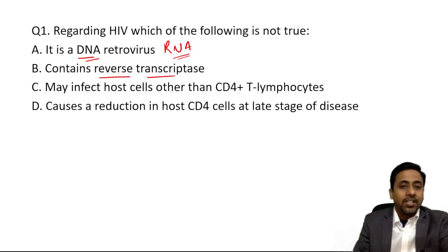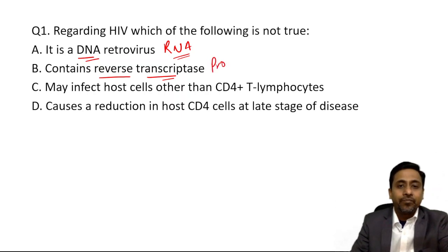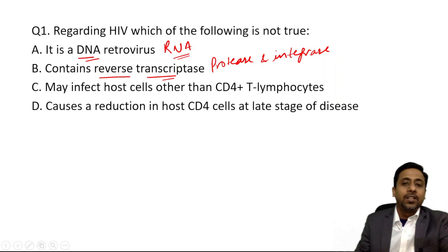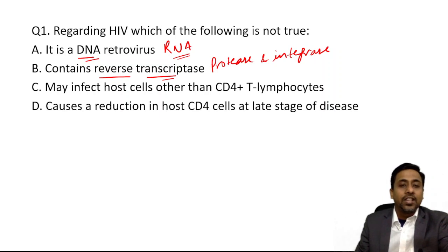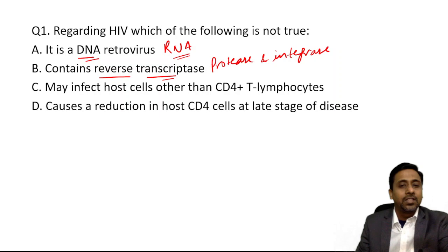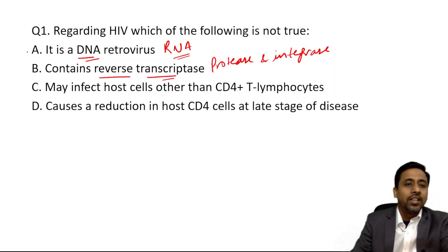It is correct that HIV contains the reverse transcriptase enzyme. Other enzymes present along with reverse transcriptase are protease and integrase. It may infect host cells other than CD4+ T lymphocytes — yes, that is true. CD4+ T helper cells are the primary target, and there is reduction of host CD4 cells at a late stage of disease. So the answer to this question is A — it is not a DNA retrovirus.